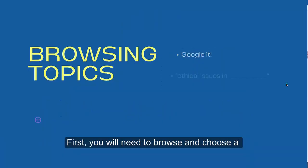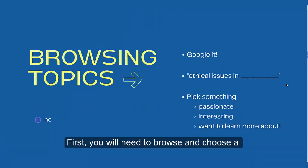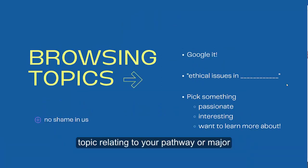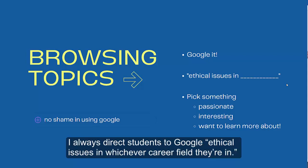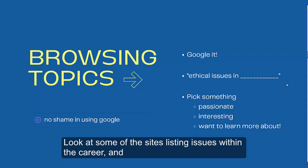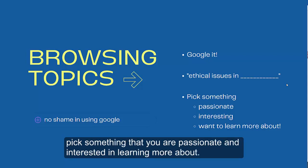First, you will need to browse and choose a topic relating to your pathway or career. I always direct students to Google ethical issues in whichever career field they're in. Look at some of the sites listing issues within the career and pick something that you are passionate and interested in learning more about.